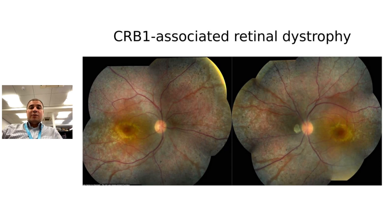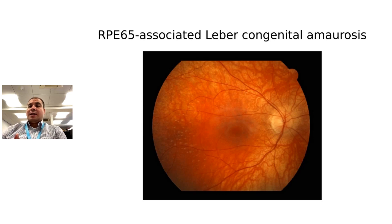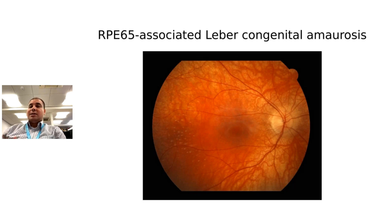This is CRB1-associated retinal dystrophy — a severe early-onset dystrophy. By pattern recognition, you can see that around the vessels there are areas where the tiling of the retina is somewhat preserved, and there is a gold reflex in the center — very characteristic of this gene. This next slide shows a case of Leber congenital amaurosis. You see white dots with an otherwise very thin retina. The gene involved is RPE65, for which we actually have an approved gene therapy — so we can offer some form of treatment.